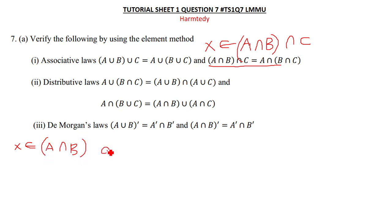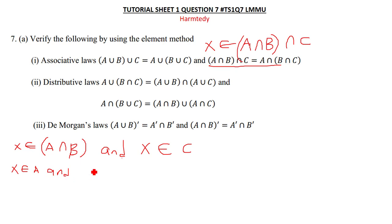This x is a member of A∩B, and this same x is also a member of C. For A∩B, since x is a member of A∩B, this x is a member of A and also a member of B, and as stated earlier it is also a member of C. So x is a member of A, x is a member of B, and x is a member of C.